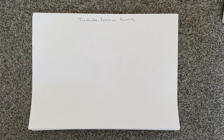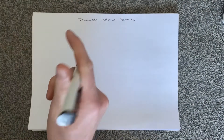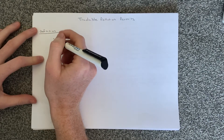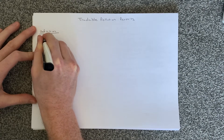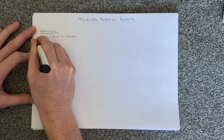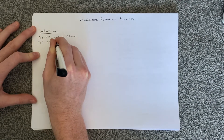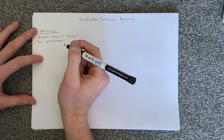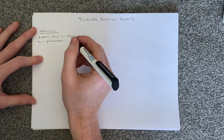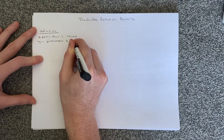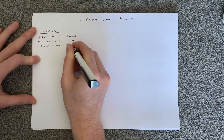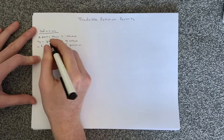We're going to have a look at tradable pollution permits. Let's start off by defining what a tradable pollution permit is. A tradable pollution permit is a permit that is issued by a government to allow a fixed amount of pollution to be created.